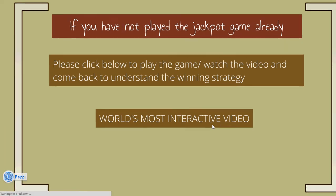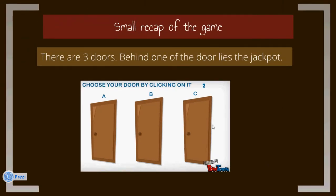Let's do a short recap of the game. There are three doors. Behind one of the doors lies the jackpot. The game is divided into two stages. In stage one, the host of the show asks you to choose a door.